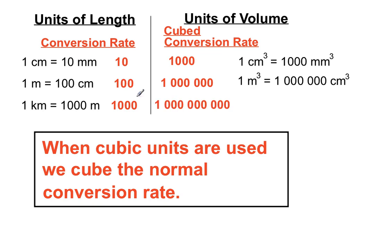If we cube a thousand — 1000 × 1000 × 1000 — we get nine zeros and we get a billion. One cubic kilometer has a billion cubic meters in it. So with volume, we're talking cubic units and the conversion rates get pretty powerful.